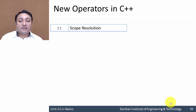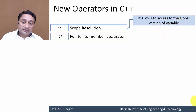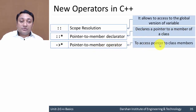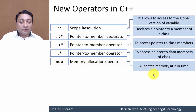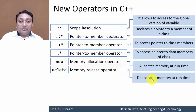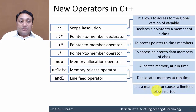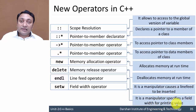Some new operators are introduced in C++. Scope resolution allows access to the global version of a variable. Pointer to member declarator declares a pointer to a member of a class. Pointer to member operator is used to access class members and point to data members of a class. The 'new' operator allocates memory at runtime, similar to malloc and calloc. The 'delete' operator deallocates memory at runtime. 'endl' is the end-line operator that inserts a new line. 'setw' is a fill-width manipulator used for formatted output to specify a fill width when printing values.